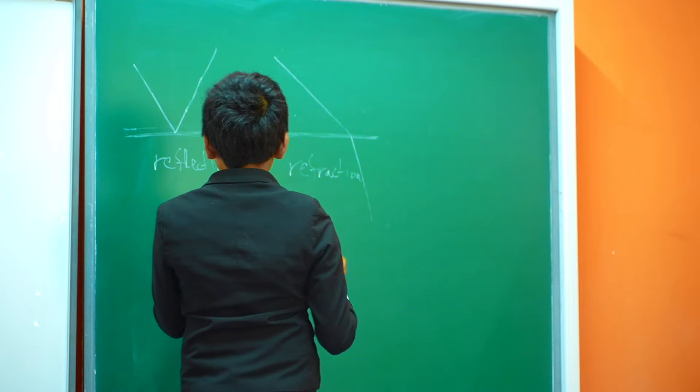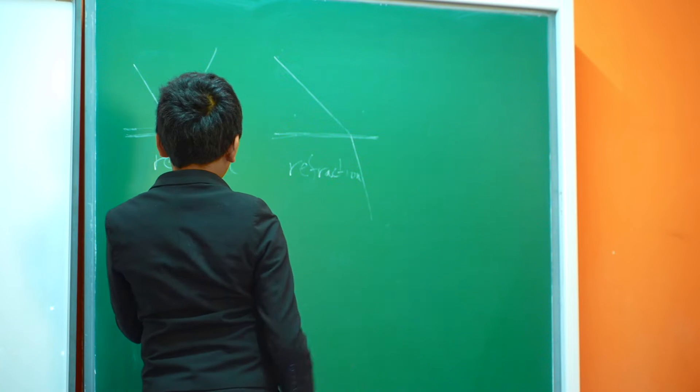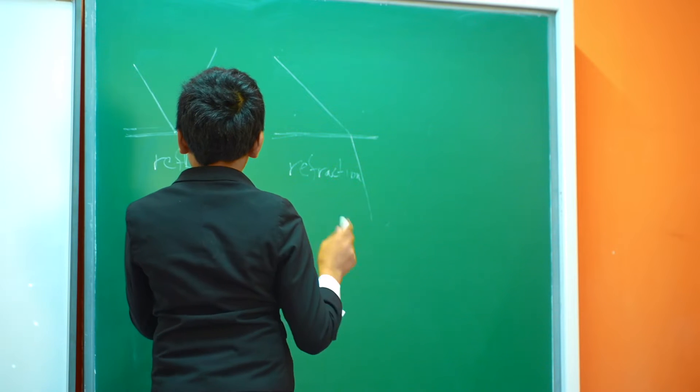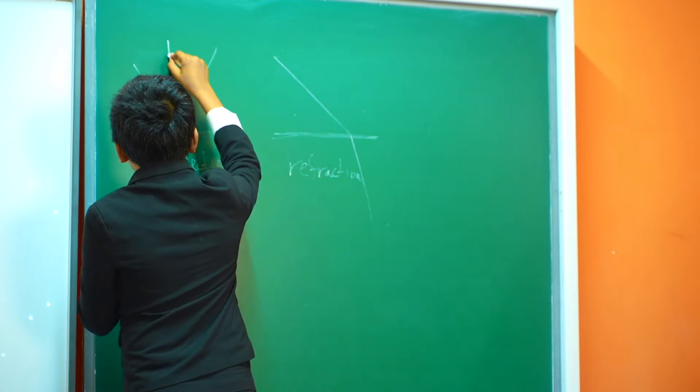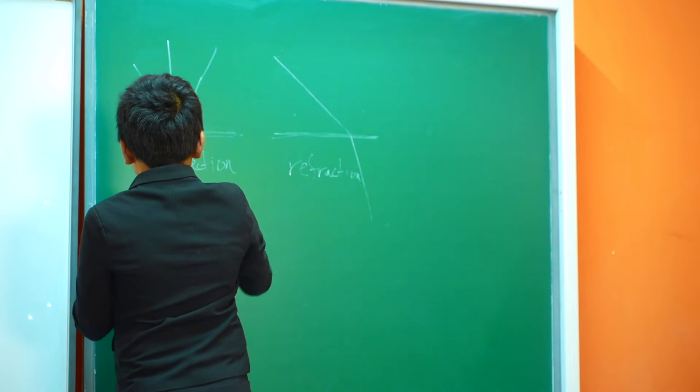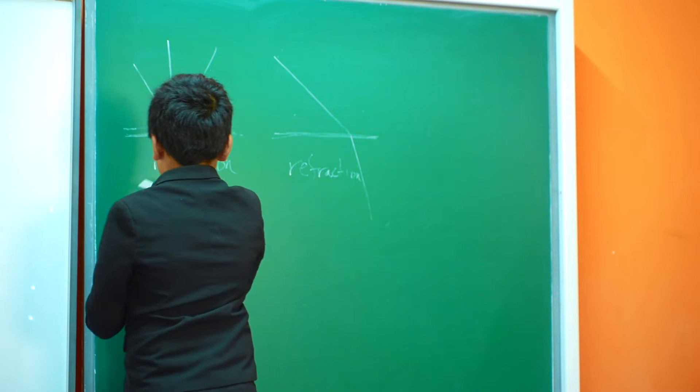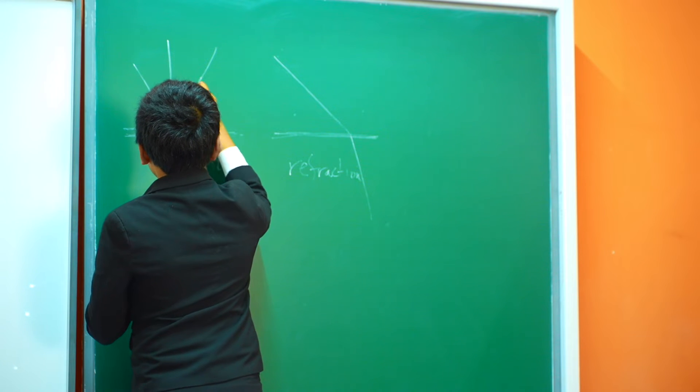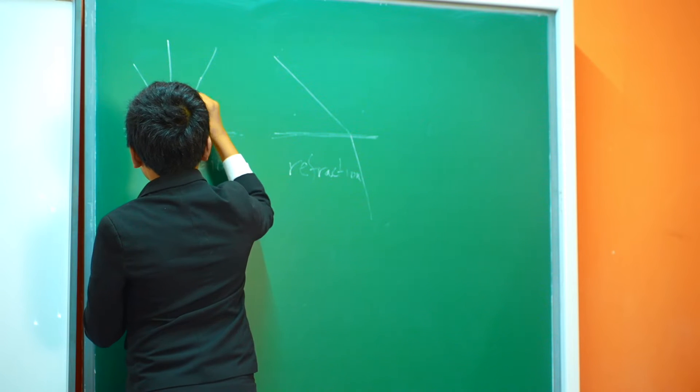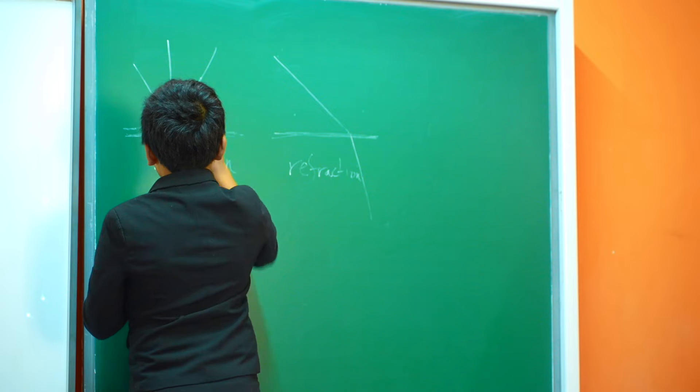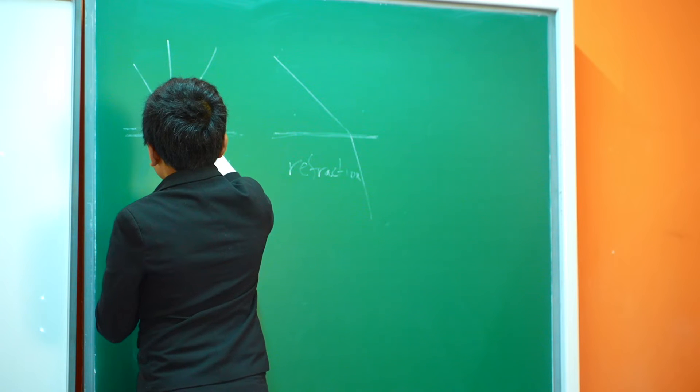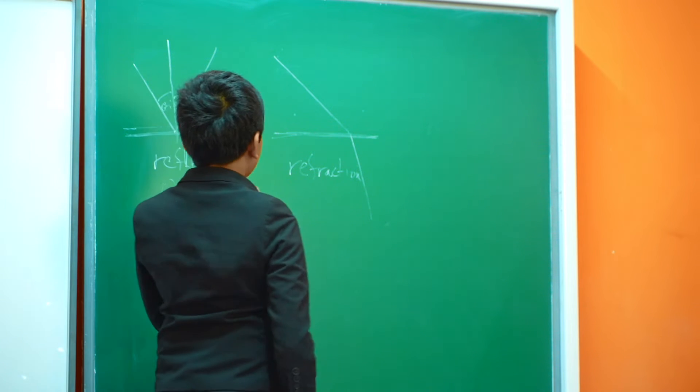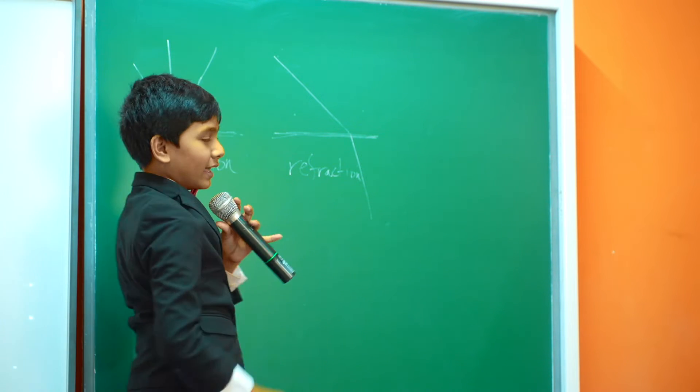So you guys probably already know what is the case for reflection. So how can you find theta f or theta r - I cannot write with this thing - given theta i? How can you find the angle of reflection given the angle of incidence?